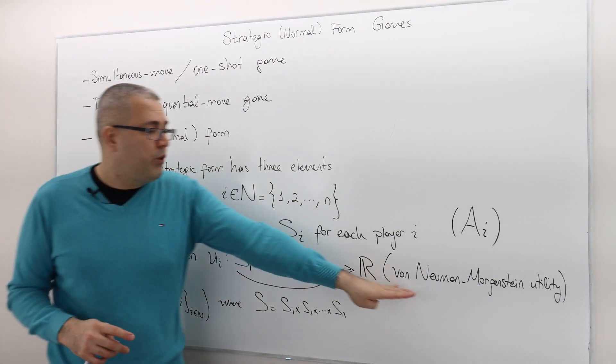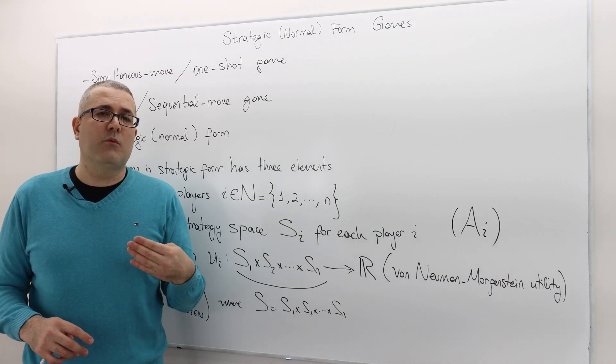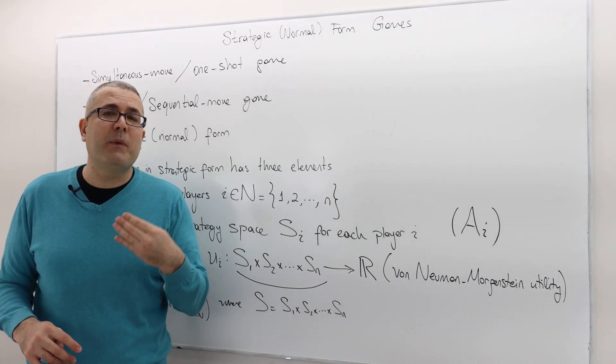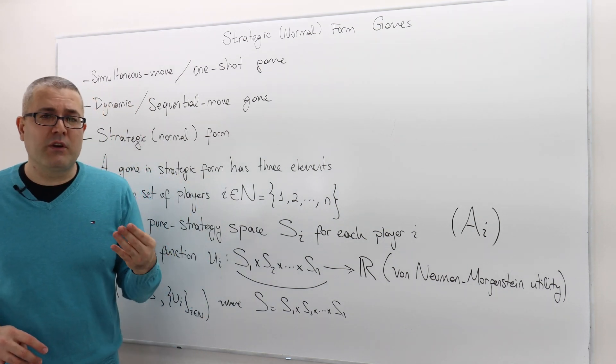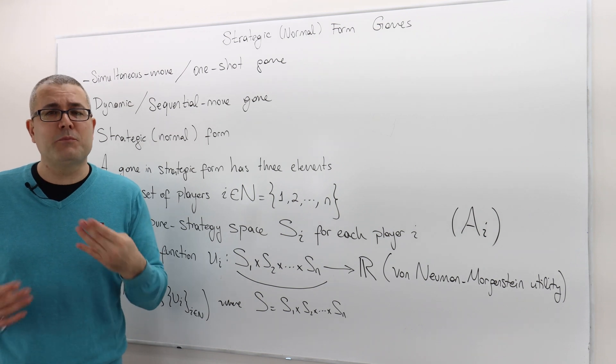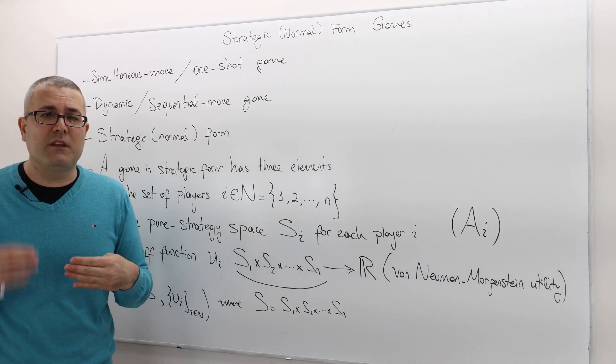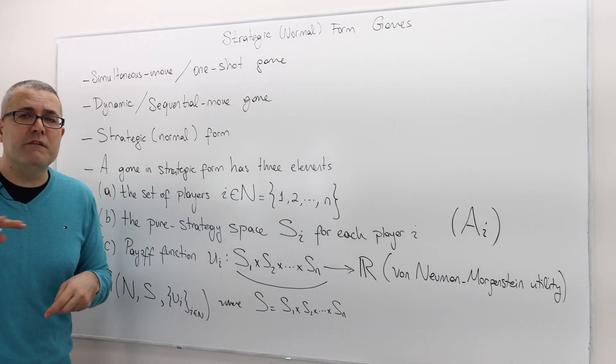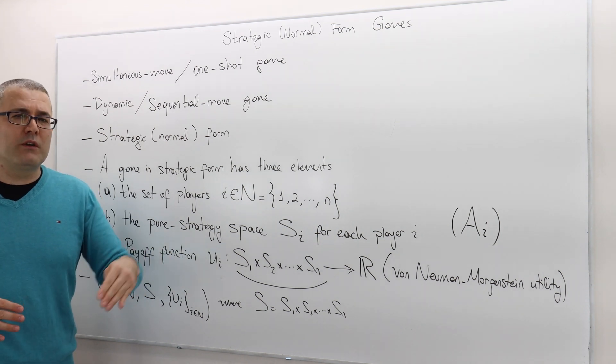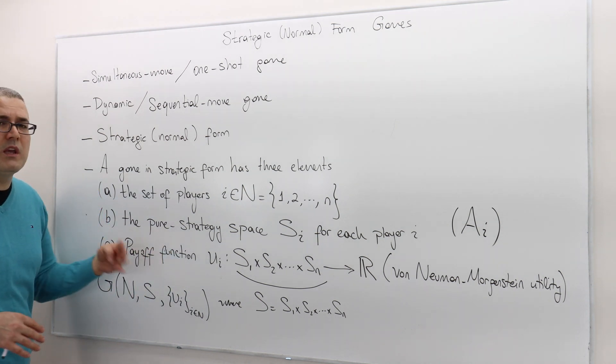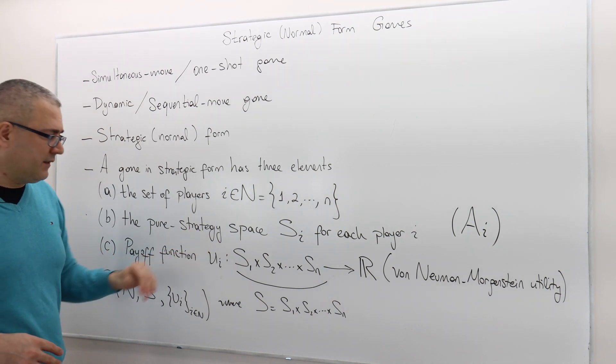We say the UI is a von Neumann Morgenstern utility function. Basically, that means we assume that the players are expected utility maximizer. So if you have taken advanced microeconomic theory, you know what I mean by expected utility theory. If you haven't, you may probably have heard of expected utility theory, but you should definitely review the concept of von Neumann Morgenstern utility function before going through the details of game theory, because we are going to use expected utility a lot.